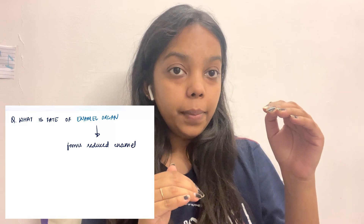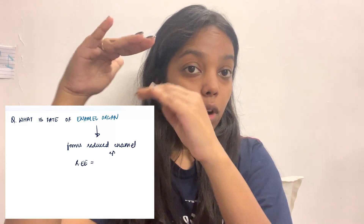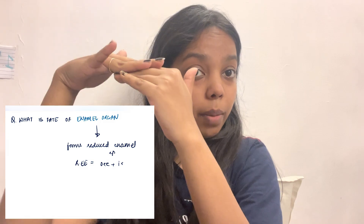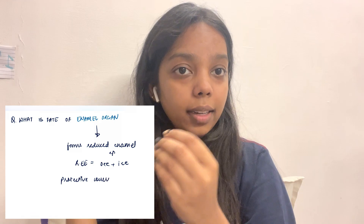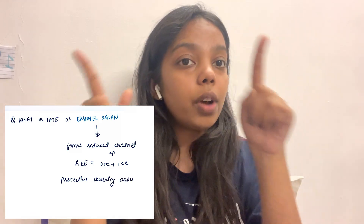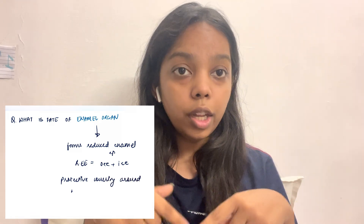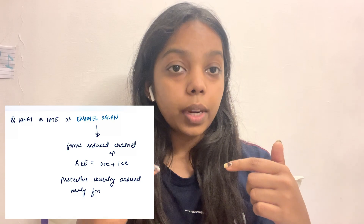What is the final fate of the enamel organ? Once enamel formation is completed, the outer and inner enamel epithelium — now the ameloblasts — come together and form the reduced enamel epithelium, which is two to three cell layers thick. It forms a protective covering around the newly formed tooth, and this is called the reduced enamel epithelium.